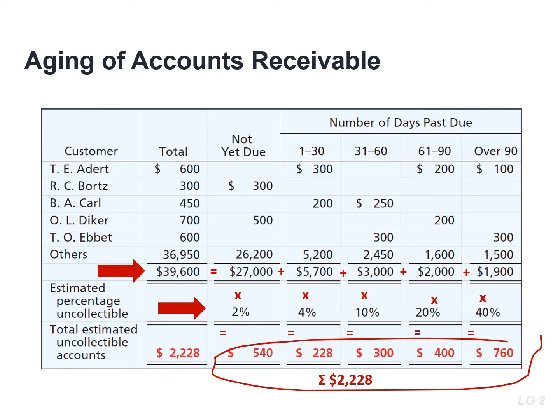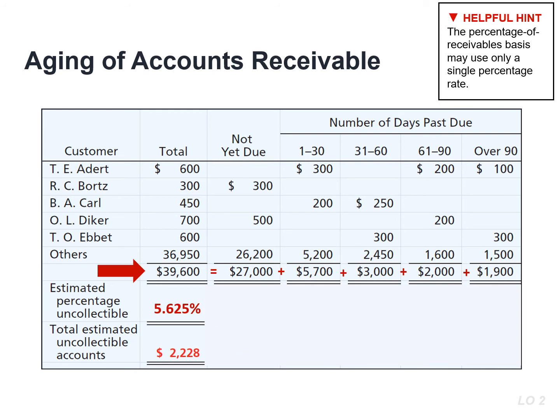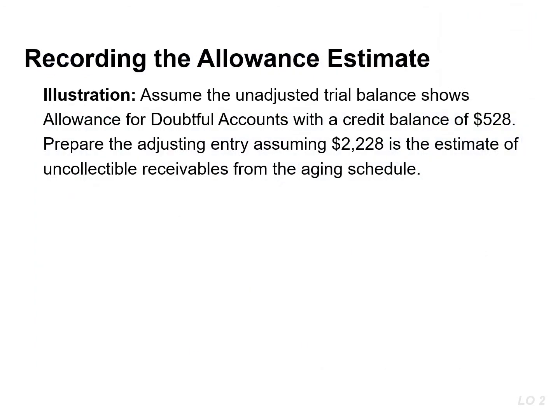This represents the amount of existing customers' accounts that are expected to become uncollectible in the future. It represents the amount or credit balance needed in the allowance account. You may use only a single percentage rate — for example, the bad debt loss rate may be 5.625%, which would result in a required balance of $2,228. This amount represents the required or target balance in the allowance for doubtful accounts.